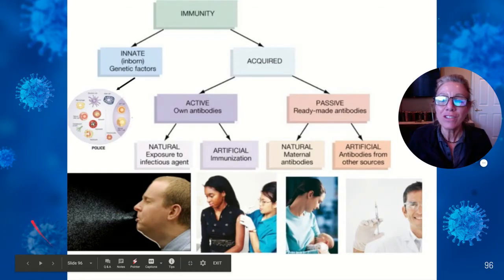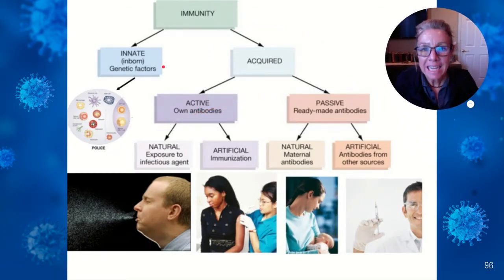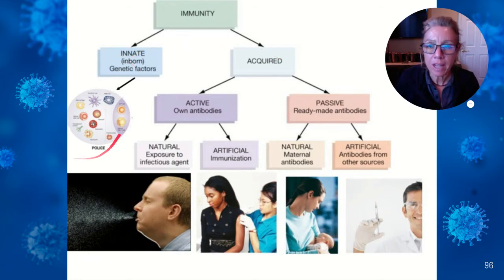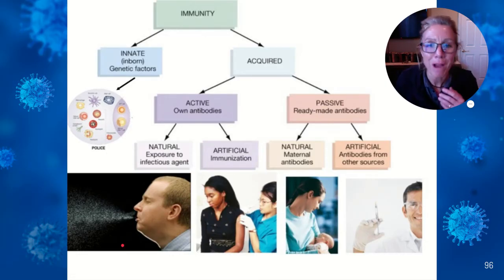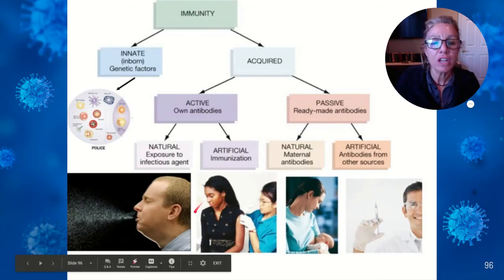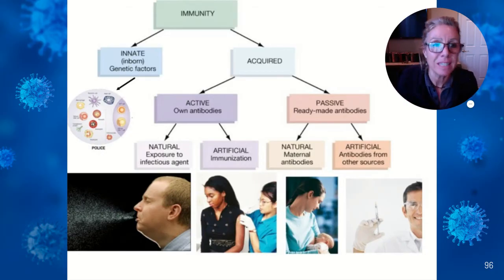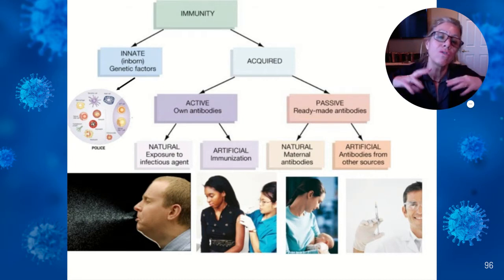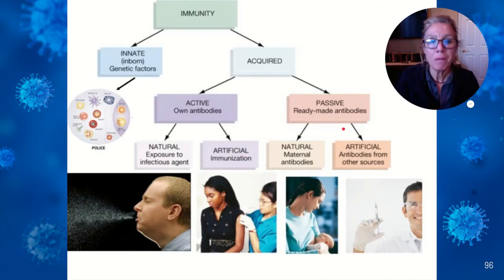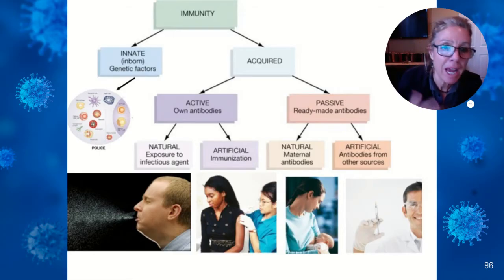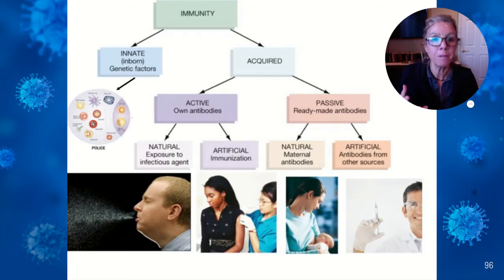Let's compare and contrast innate versus acquired immunity. Innate immunity you're born with. For acquired immunity there are two ways to get it: you can be naturally exposed — someone sneezing on you or touching a surface — or you can get active immunity through immunizations. For example, if a coronavirus vaccine is developed and you get vaccinated, you start developing your clone armies so that if you're ever exposed to the coronavirus, you already have your memory cells ready.